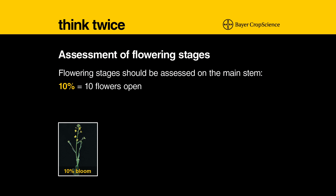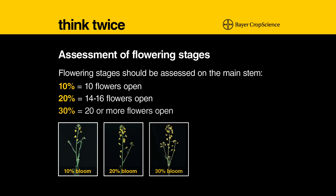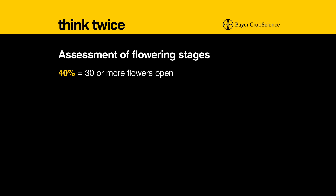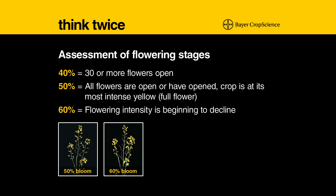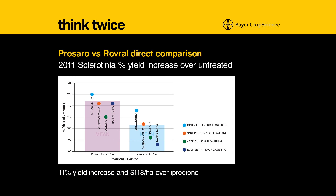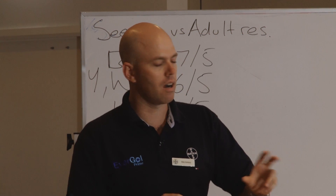Timing is very critical when putting on Prozaro chasing sclerotinia, and the sweet spot is 20 to 30 percent bloom from what we've seen. From 2011 results, comparing to doing nothing, we had about a 15 percent yield response on average over the sites. Rovral, which was registered at that point, was our only option but was not quite as effective. It's really a good protectant, but it doesn't hold disease if it's already present — if you've got leaf lesions, it doesn't stop the infection getting worse. Whereas Prozaro seemed to hold it.